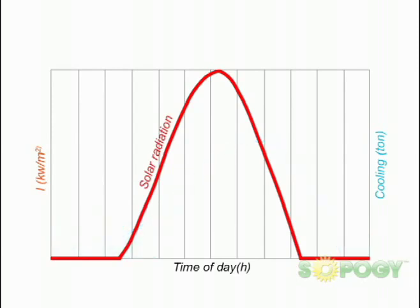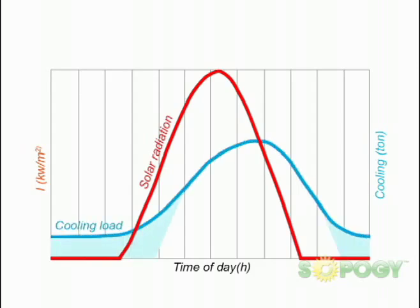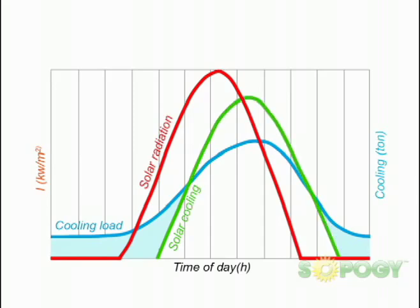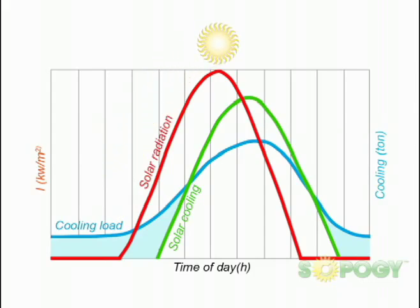The red line signifies the available solar radiation on a typical summer day, the blue line signifies a typical building cooling load, and the green line signifies a typical cooling load harnessed from solar energy. When the sun is at peak radiation, the demand for air conditioning is at its highest. Likewise, this is when solar cooling is also at its highest, as it is using thermal energy to directly drive the solar AC system. This makes solar air conditioning an ideal solution for our customers.